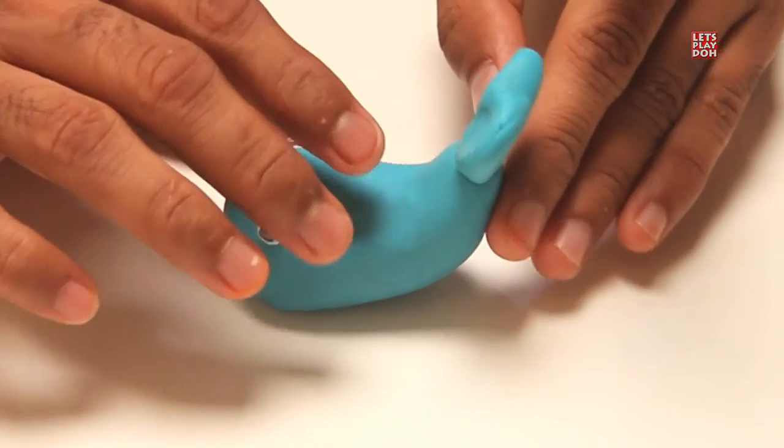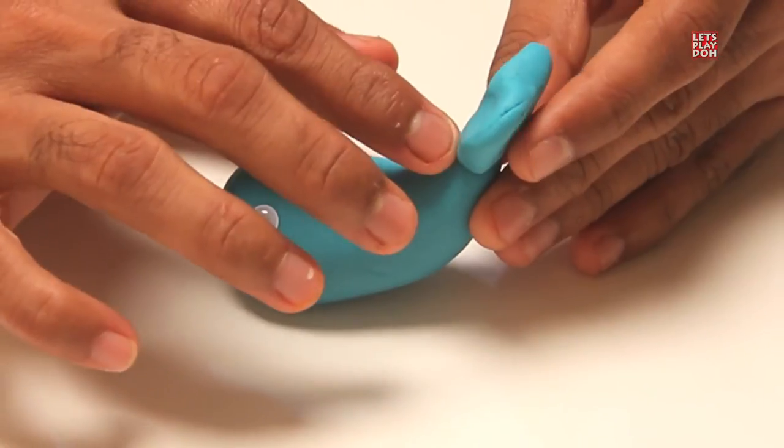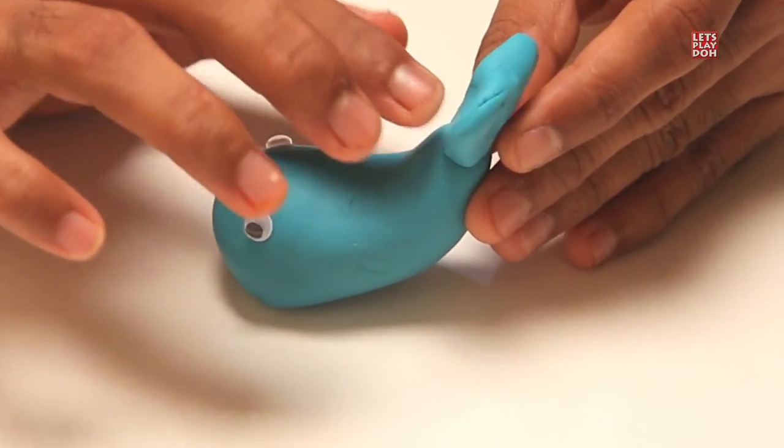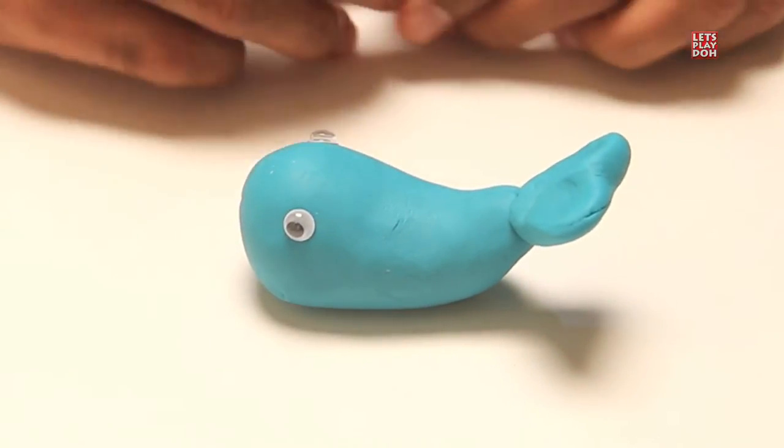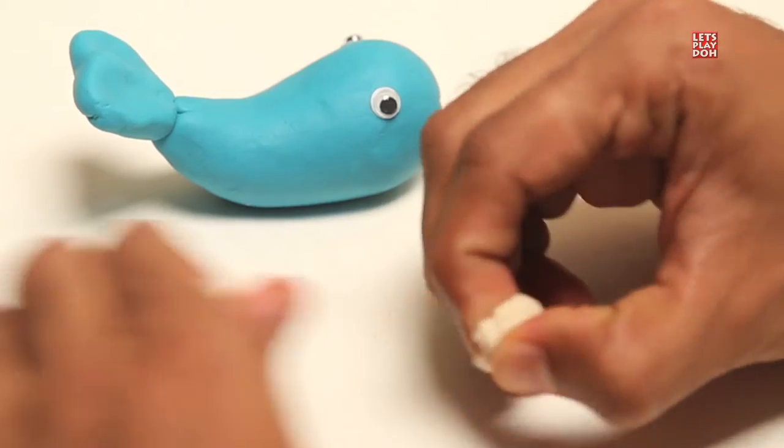We've got a whale with googly eyes, and a smile, and a great tail, but we're missing something. What are we missing? That's right, fins. For our whale to swim under the ocean, he needs fins.